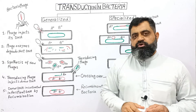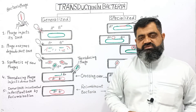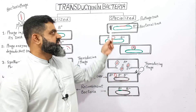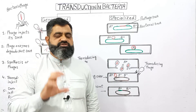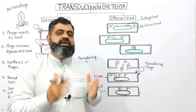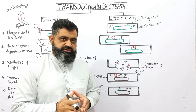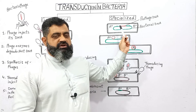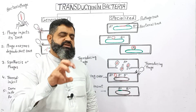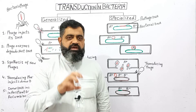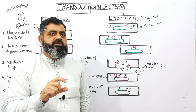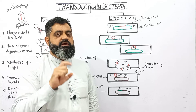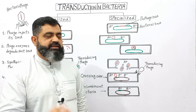In the same way, there is another type of transduction known as specialized transduction. This type of transduction takes place in the lysogenic cycle of bacteriophage. During this process, the bacteriophage attacks on the surface of bacteria and penetrates its DNA into the cell of the bacterium, but rather than destroying the cell, the phage DNA becomes incorporated into the bacterial DNA.